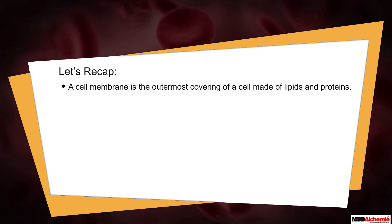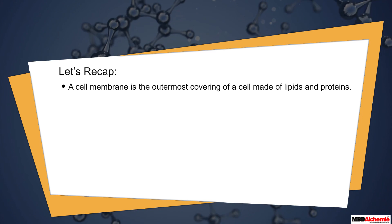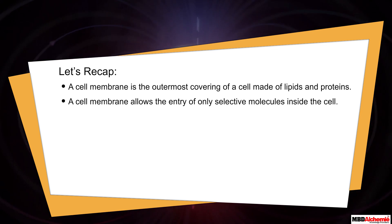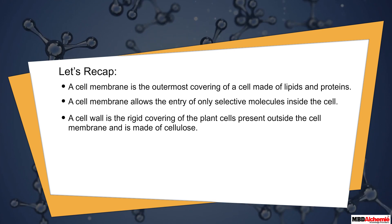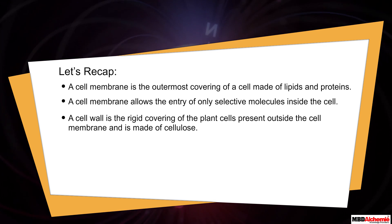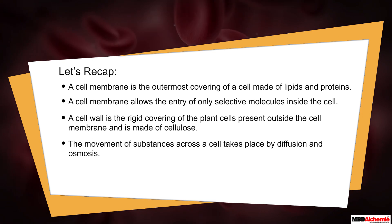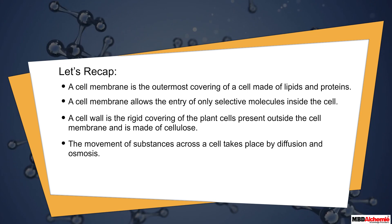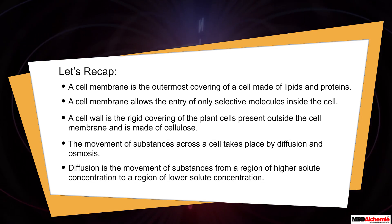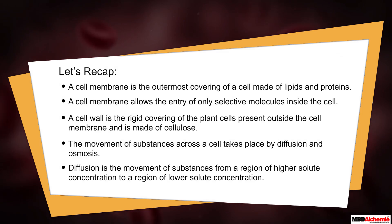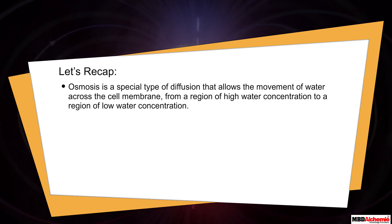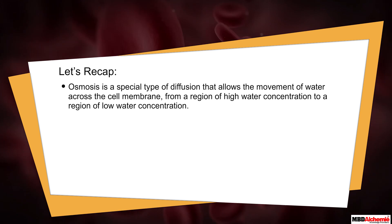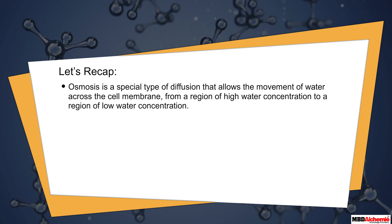Let's recap: A cell membrane is the outermost covering of a cell, made of lipids and proteins. It allows the entry of only selective molecules inside the cell. A cell wall is the rigid covering of plant cells, present outside the cell membrane, and is made of cellulose. The movement of substances across a cell takes place by diffusion and osmosis. Diffusion is movement from high solute concentration to low, while osmosis is a special type of diffusion for water movement across the cell membrane.